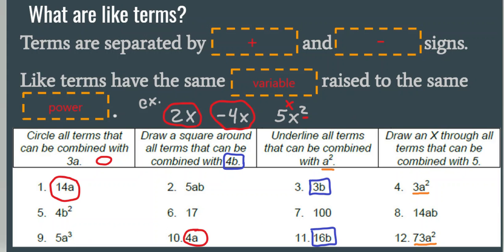Let's try the last one. Draw an X through all the terms that can be combined with 5. I found 2 — 17 and 100. 17 and 100 are like terms with 5 because 5 does not have a variable next to it. It's called a constant. A constant is a number that does not have a variable attached with it. So the only ones that do not have any variables next to them are 17 and 100. Those are the only two that you can combine with 5.